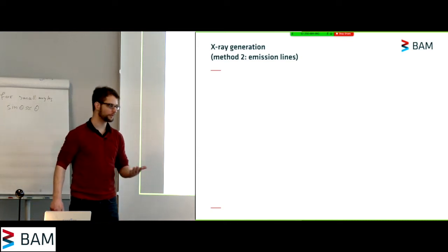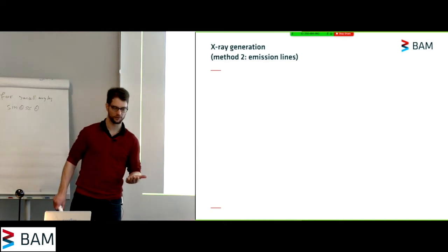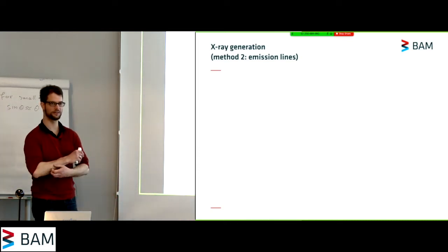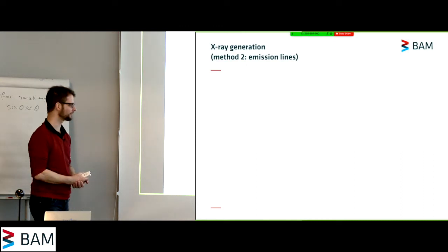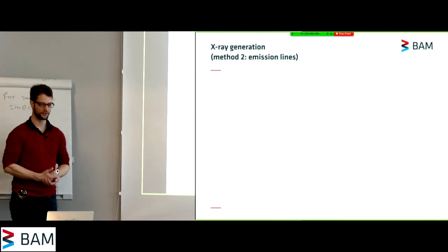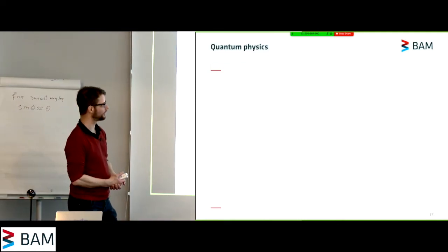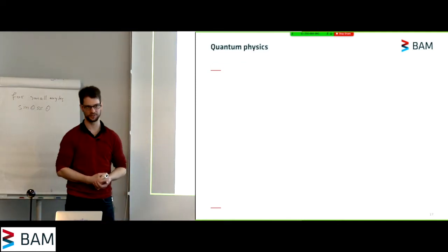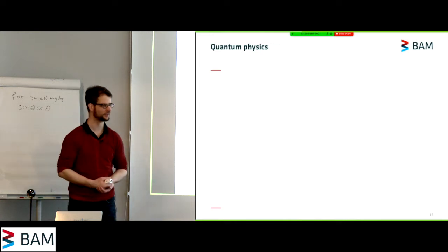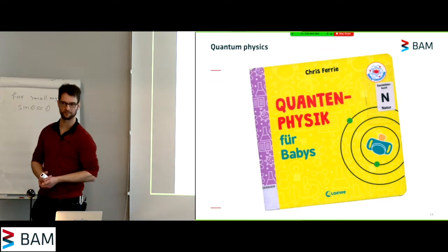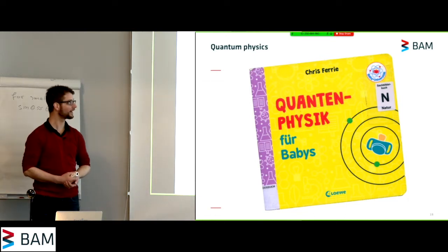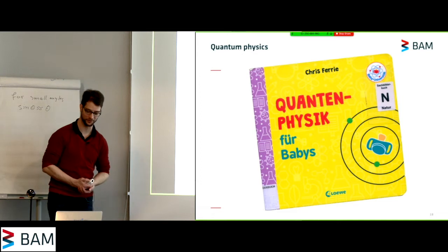So what do we do instead? Well, there's a second phenomenon that occurs and this creates emission lines. Glenn already explained it a little bit. I also had to look this up. So I found that to understand this you need to understand a little bit of quantum physics. Not to worry, I went to the library, I found this book, Quantum Physics for Babies, and it explains exactly what you need to know.